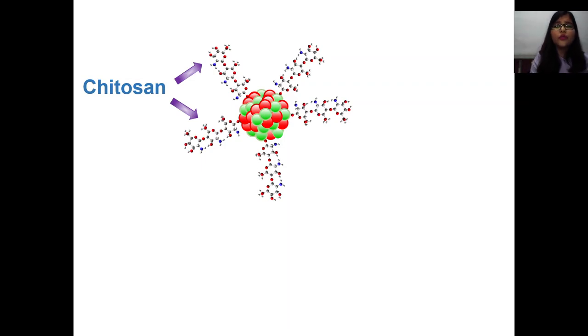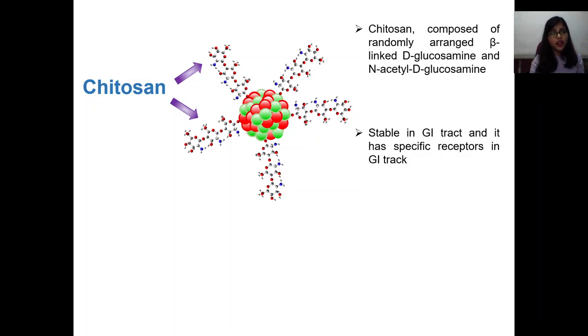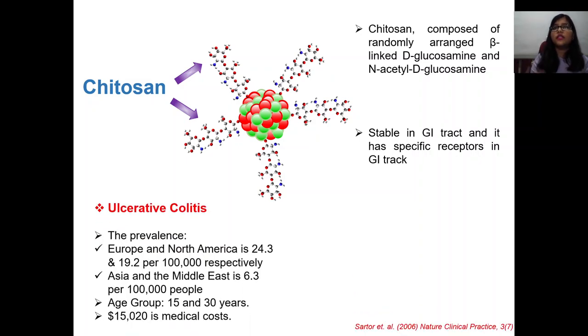So what we have taken? We have taken chitosan-capped Mn3O4. There are two questions: why chitosan and what is chitosan? Chitosan is a polysaccharide derived from chitin. And why chitosan? Because it is stable in GI tract and absorbed by intestine, that is it can cross the pH barrier of stomach.